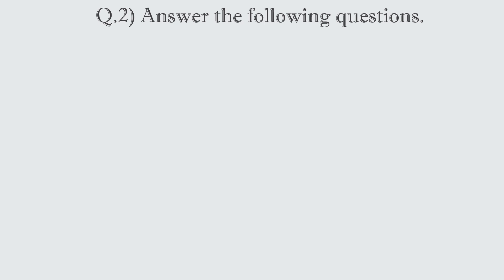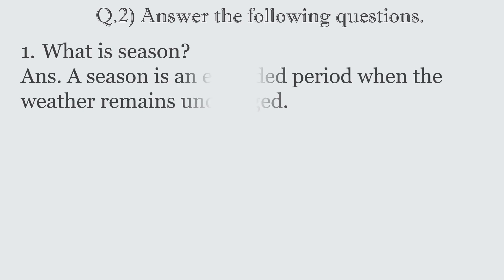Answer the following questions. Number one: What is a season? Answer: A season is an extended period when the weather remains unchanged.